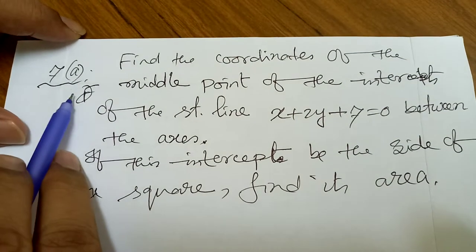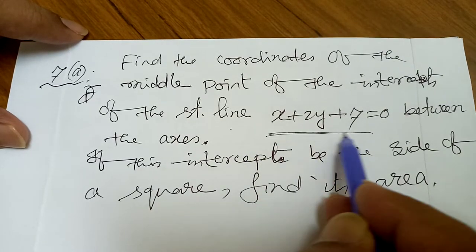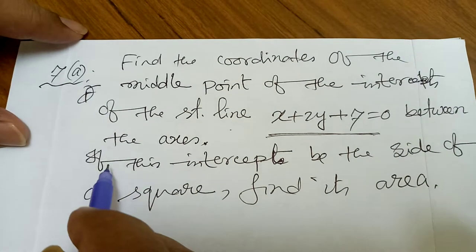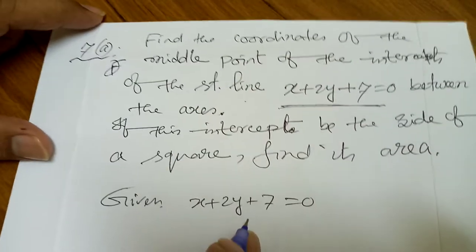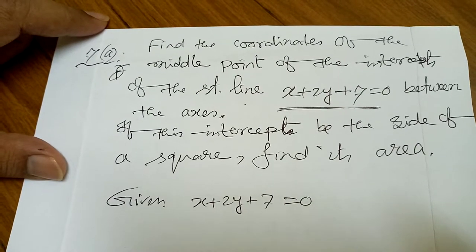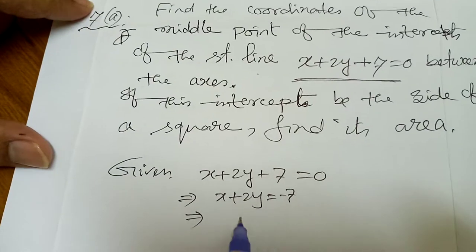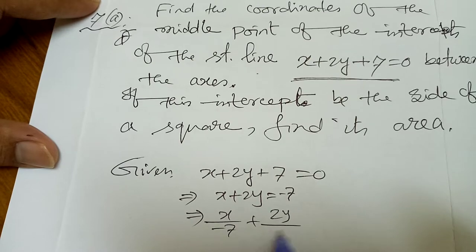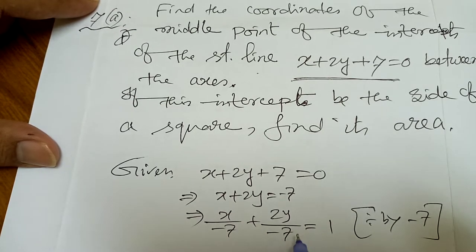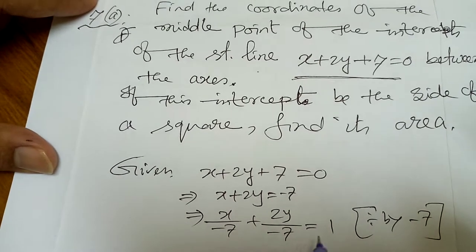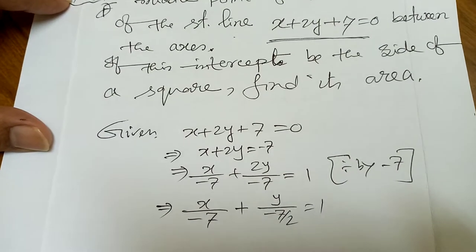Now question 7a: find the coordinates of the middle point of the intercept of the straight line x + 2y + 7 = 0 between the axes. To find the intercepting points, we convert to intercept form x/a + y/b = 1. Dividing by −7: x/(−7) + y/(−7/2) = 1.